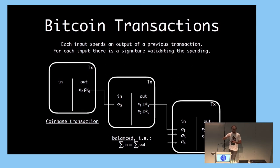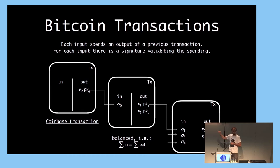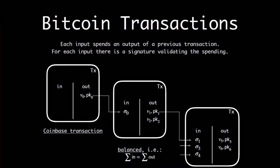If you know the signing key associated to this verification key, then you can spend the money. The way you do it is that you create a new transaction where you specify in the outputs how much of this money you are giving to which verification key, and you sign this transaction with your signing key. The transaction must be balanced: the sum of the outputs should equal the value associated to the input.